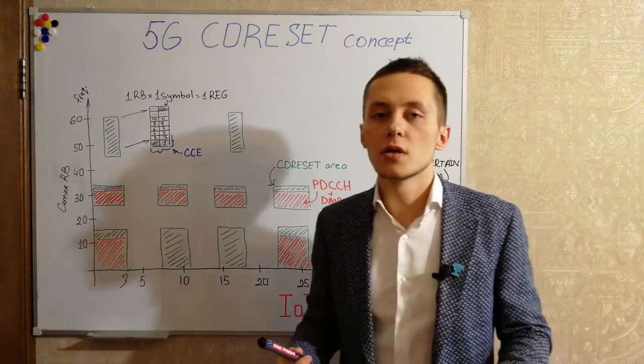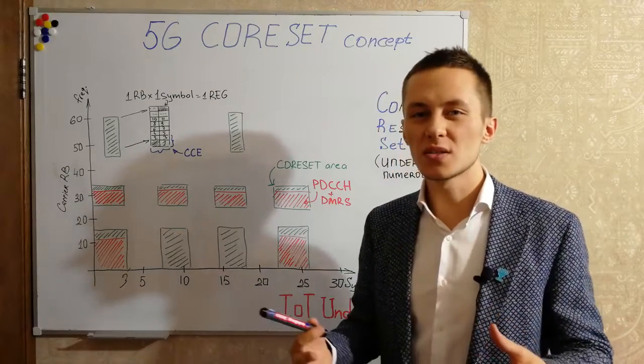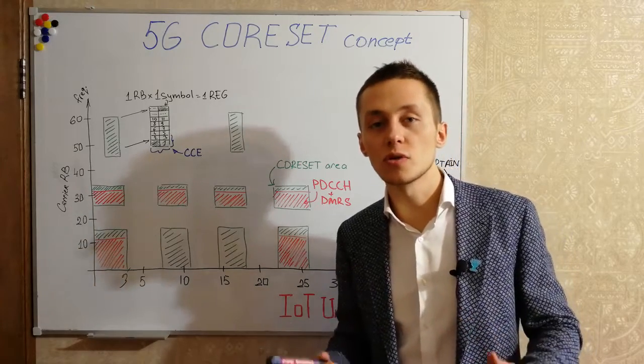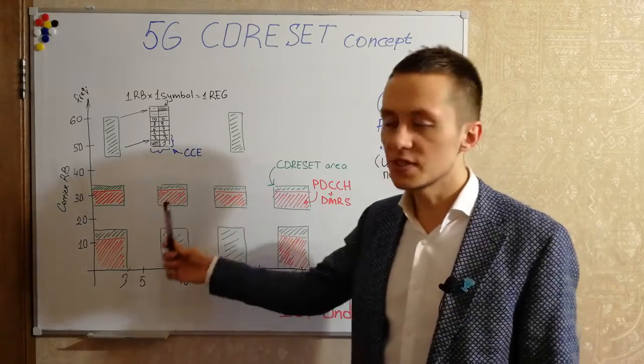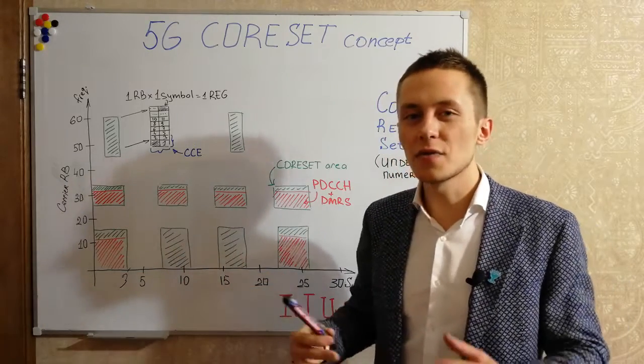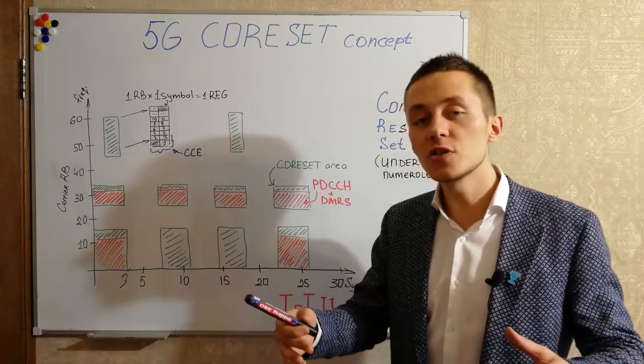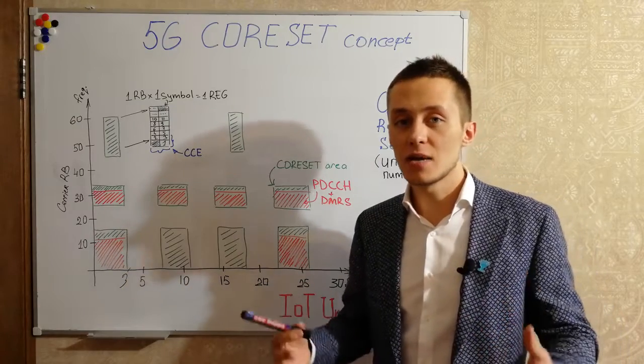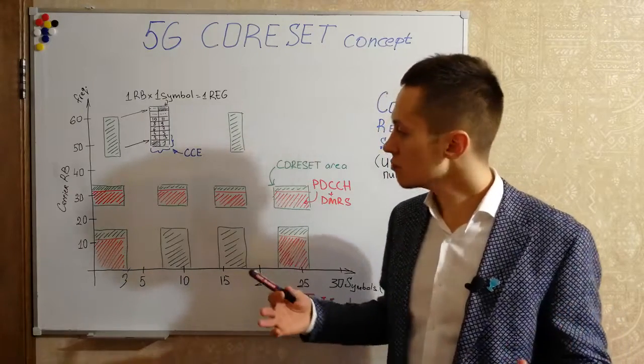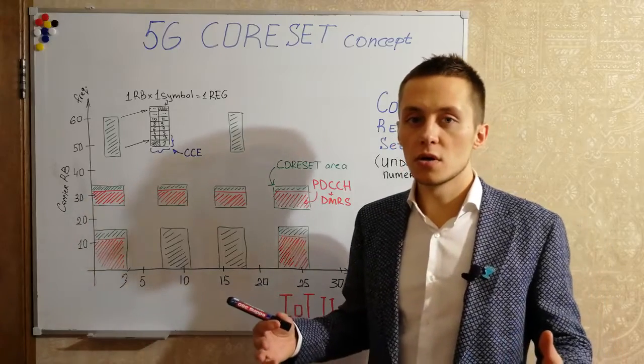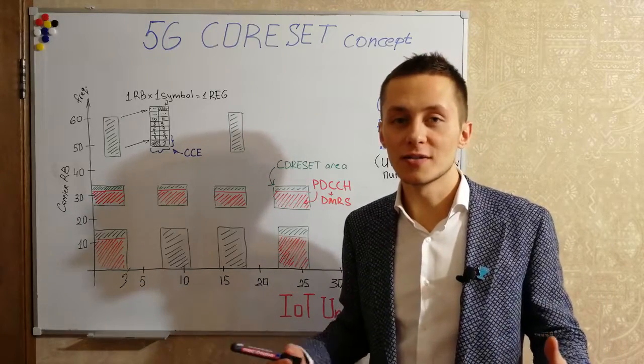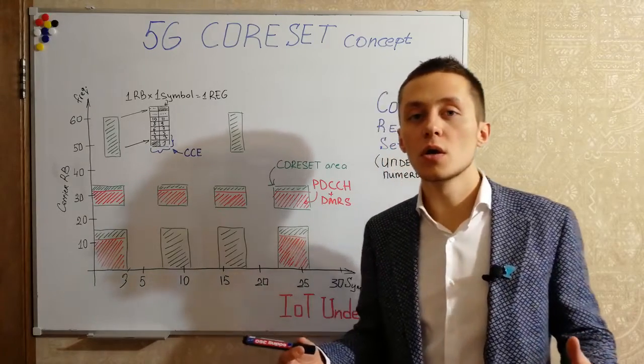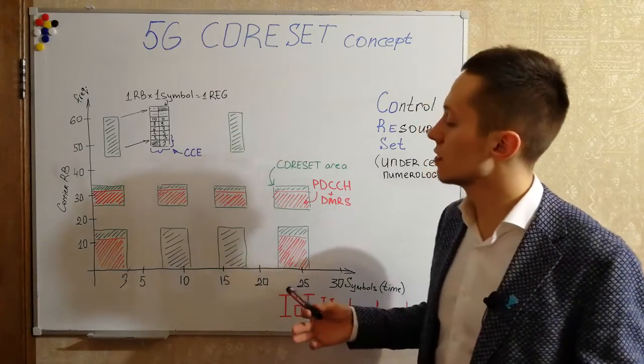In order to increase the PDCCH robustness, the probability of decoding downlink control information, we can configure repetitions, we can configure aggregation levels. And PDCCH in 5G can be repeated up to 16 times. So it can be very strong and can successfully cope with interference with low signal to noise ratio.